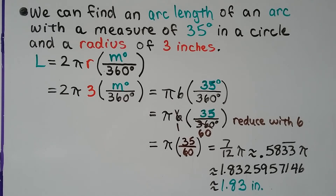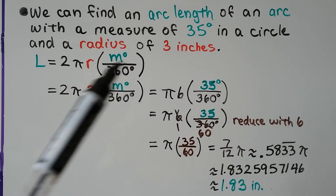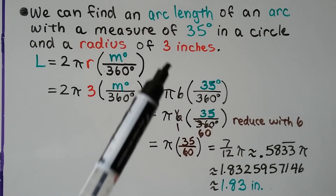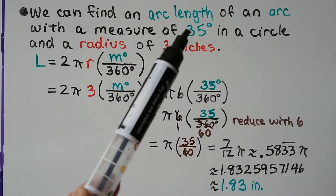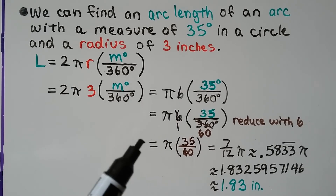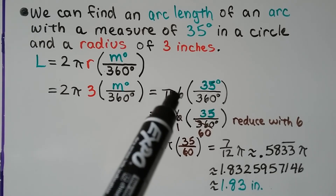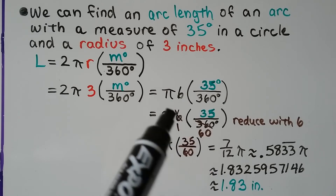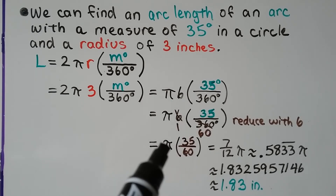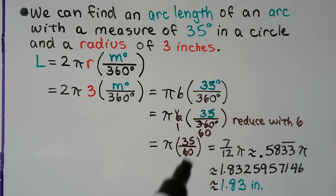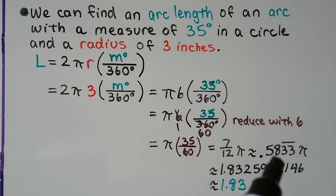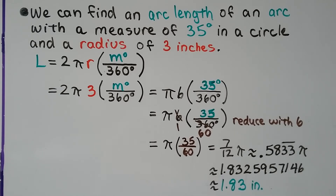We can find the arc length of an arc with a measure of 35 degrees in a circle with a radius of 3 inches. We don't have a diagram, but we can just use the formula. Our radius is 3 inches, so we put a 3 here, and we know the measure of the arc is 35 degrees. 2 times 3 is 6, so we've got π and 6. We can reduce it with 6, and we get 35 over 60 times π, which is divisible by 5, so we get 7/12 π, which comes out to approximately 1.83 inches.